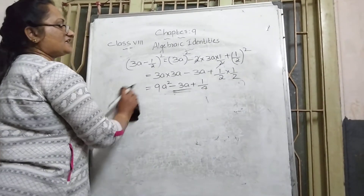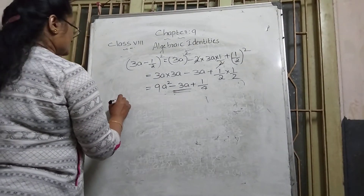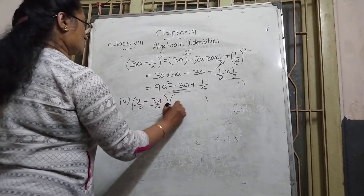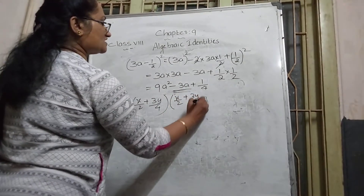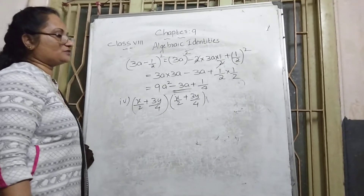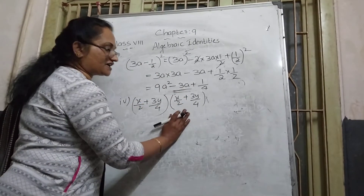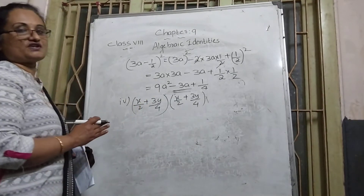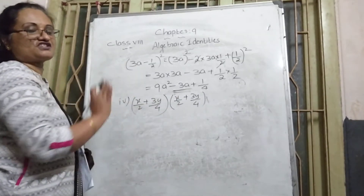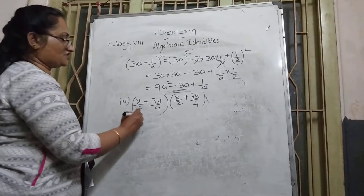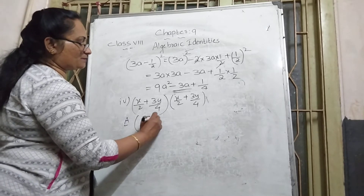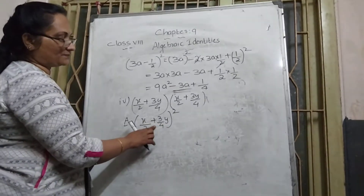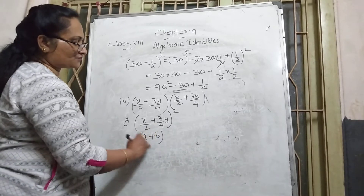The fourth question: (x/2 + 3y/4)(x/2 + 3y/4). Both brackets are the same — first term is x/2 and second term is 3y/4. The bracket is repeated two times. So which identity form? Plus case — this is the (a + b)² identity.